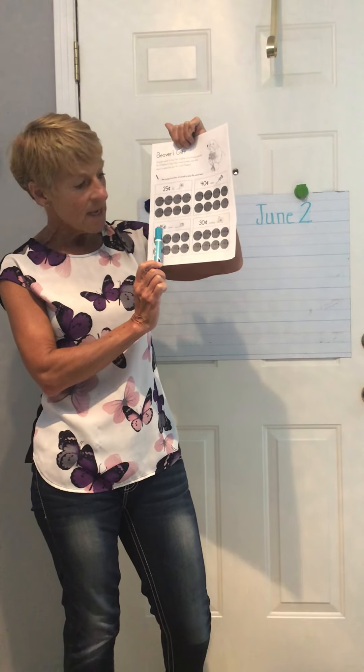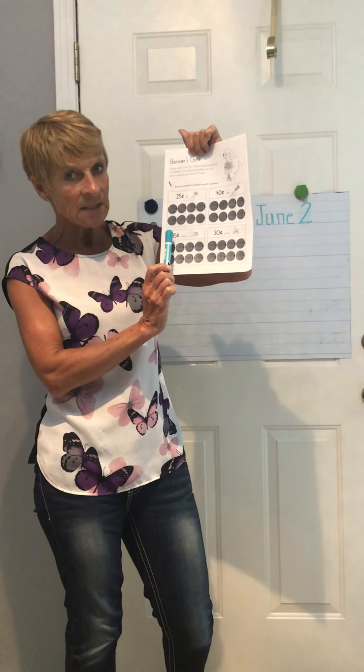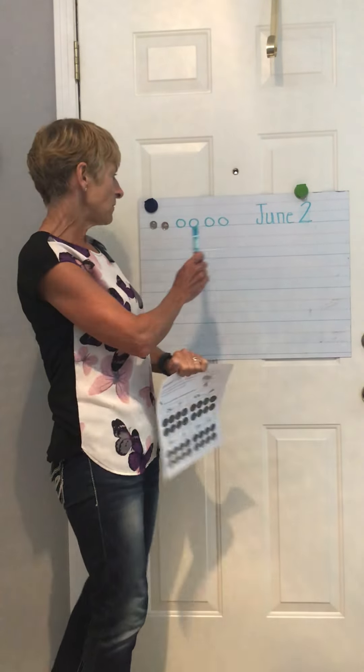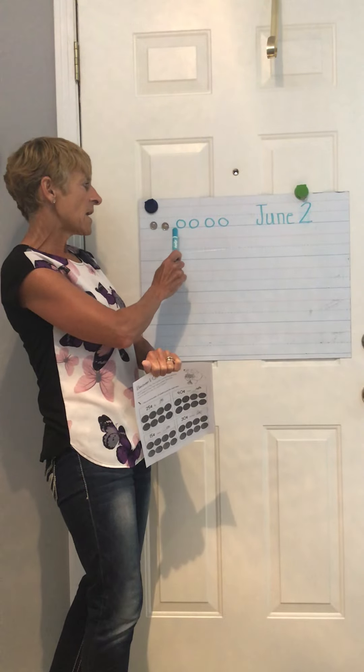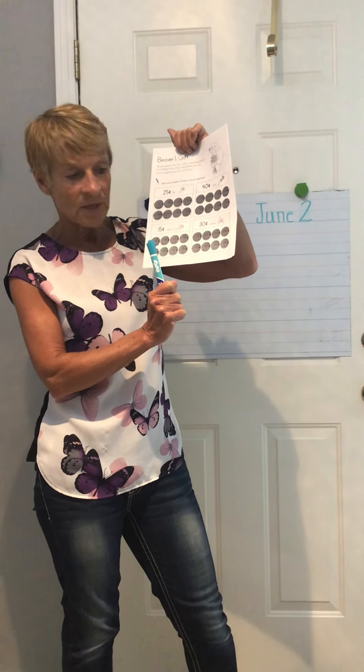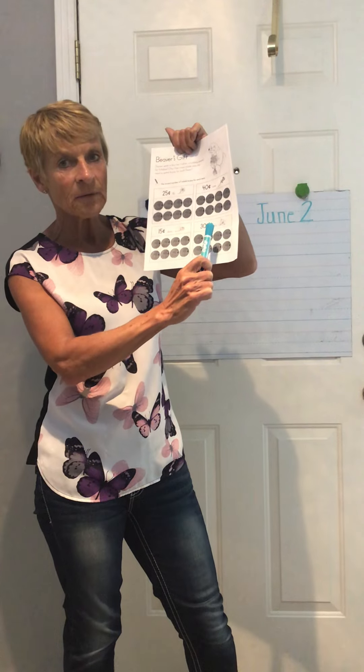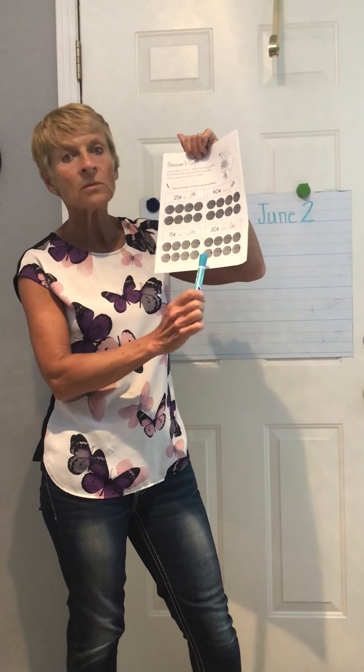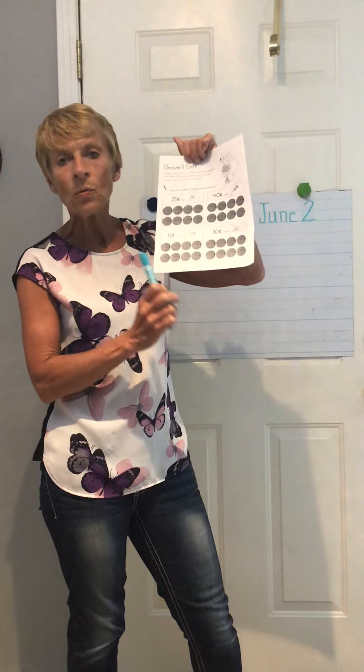Then a daisy — a daisy is fifteen cents, so if you go five, ten, fifteen. How many nickels do you have to circle? And the last is a pansy and it is worth thirty cents. So count carefully, count by fives, because there's beavers on all of these coins. Good luck kindergarten. Take care. Bye bye.